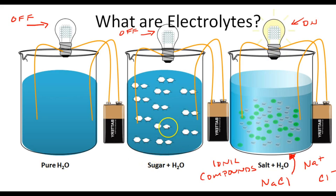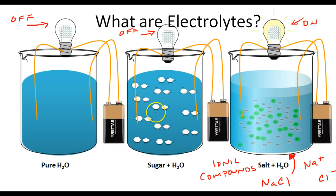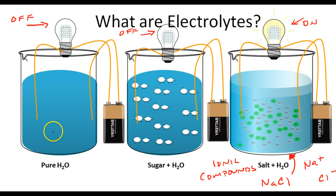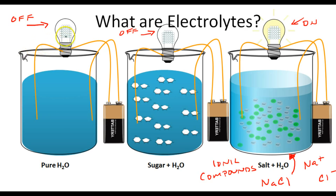If we take a look at the sugar water, sugar is not an ionic compound. In the last video, we talked about how when you place sugar in water it doesn't dissociate — it does not break apart — and therefore you don't have positively and negatively charged ions floating around in this solution, so it's not going to conduct an electric current and the light stays off. Same with the pure H₂O: there are no free-floating positive or negative ions in this water that will allow electrons to flow through this solution and turn on this light bulb.